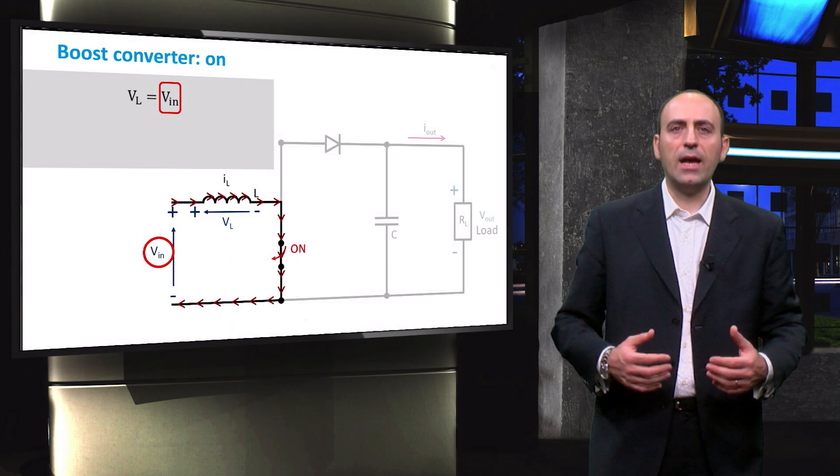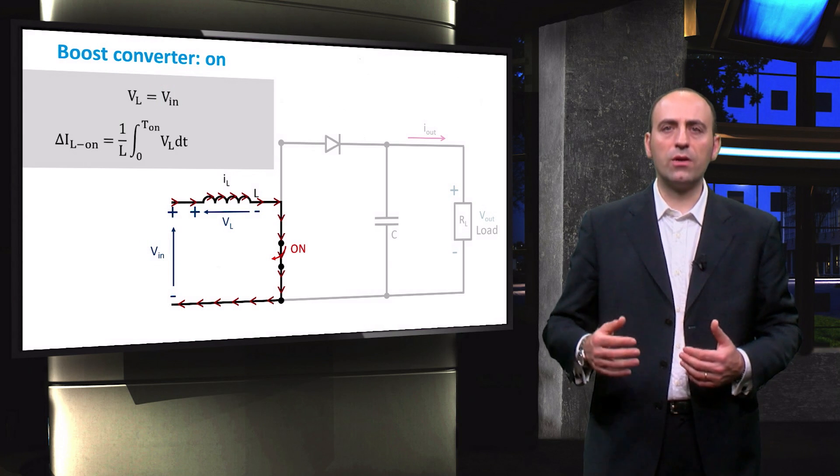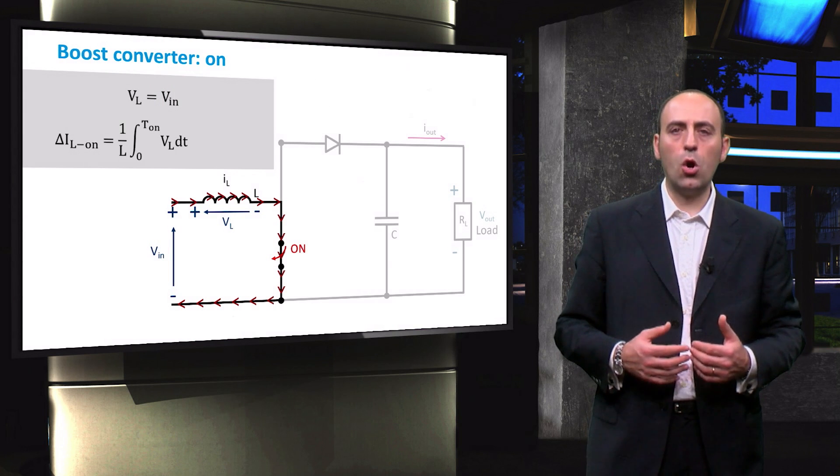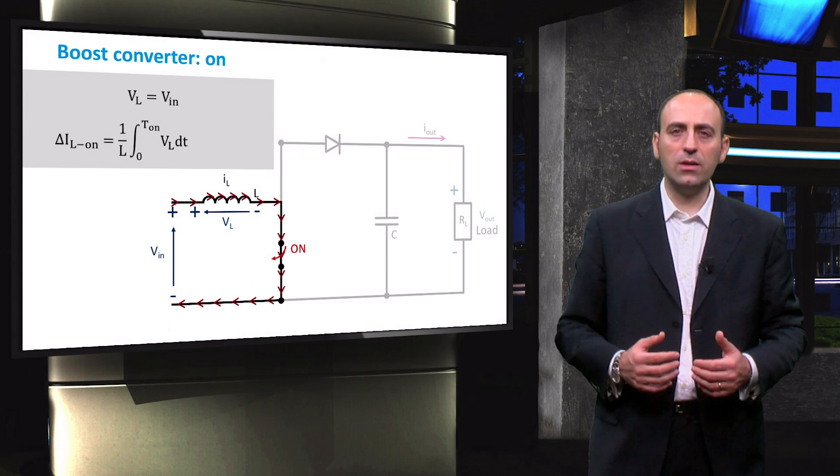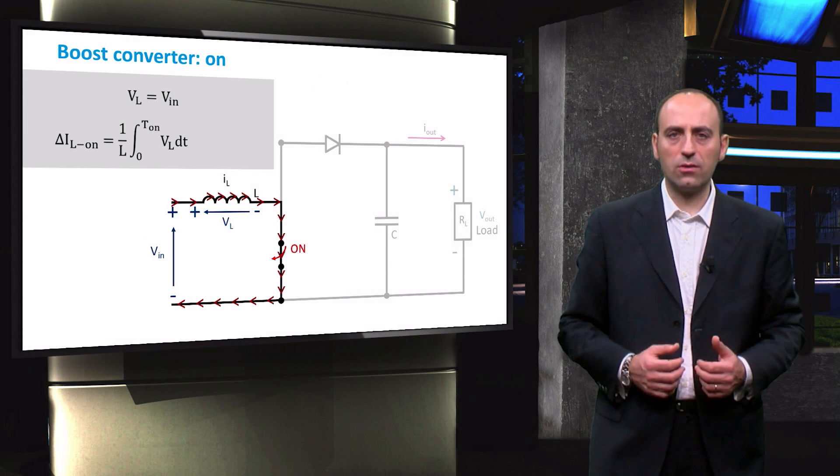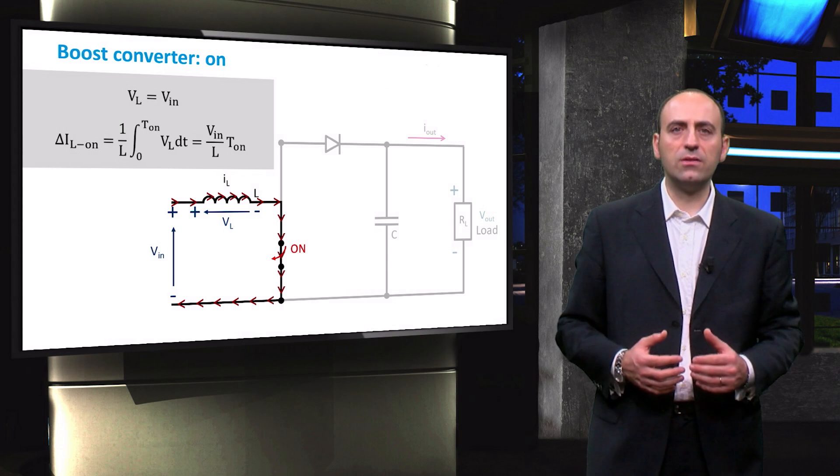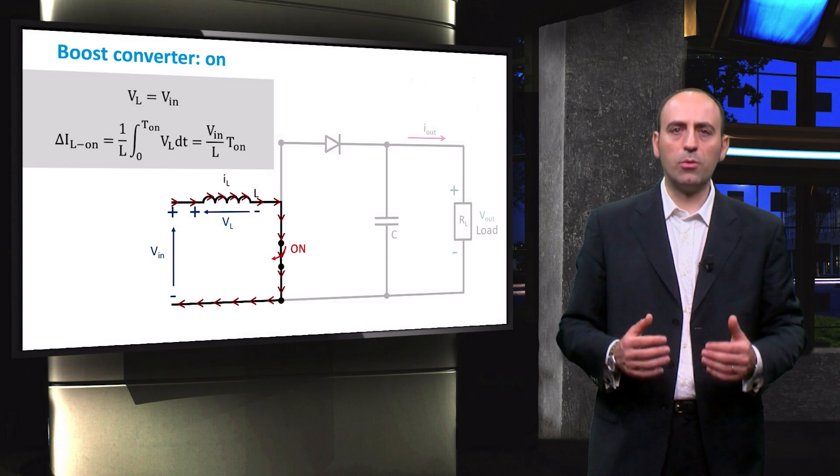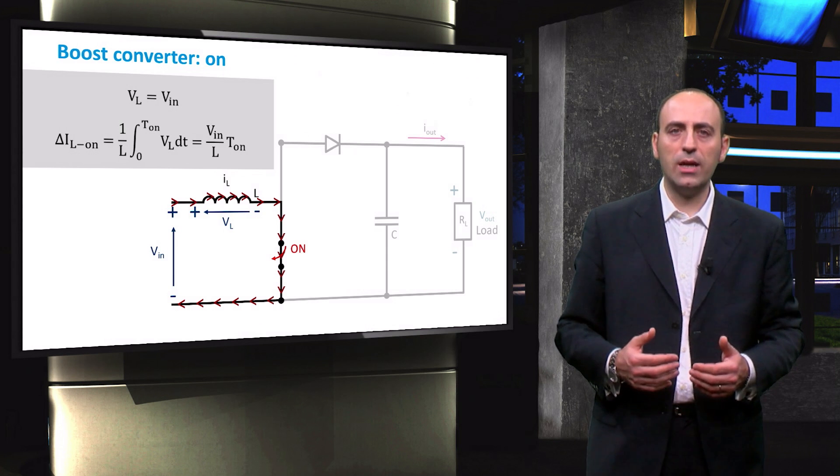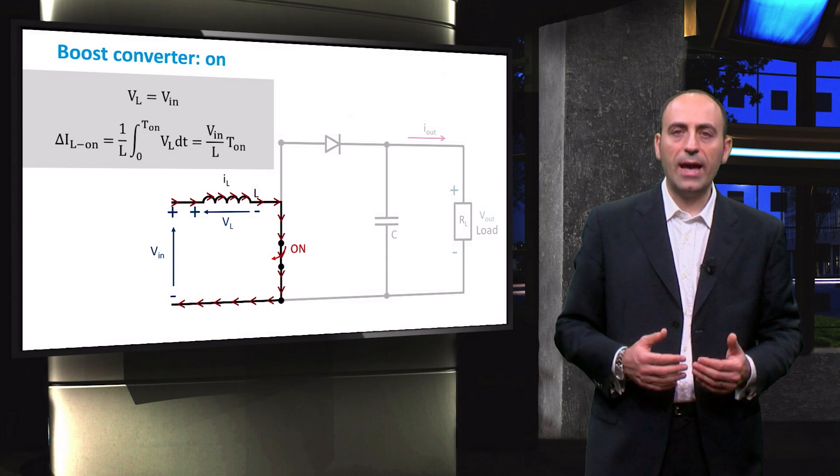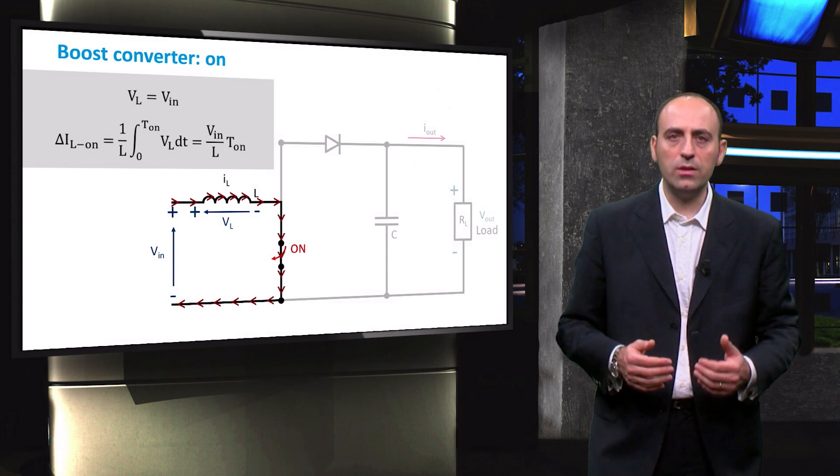As for the buck converter, we can compute the increase of current in the inductor during ON mode by integrating in time the voltage across the inductor. The result is that the increased current is directly proportional to the input voltage and the ON period, and inversely proportional to the inductance L.